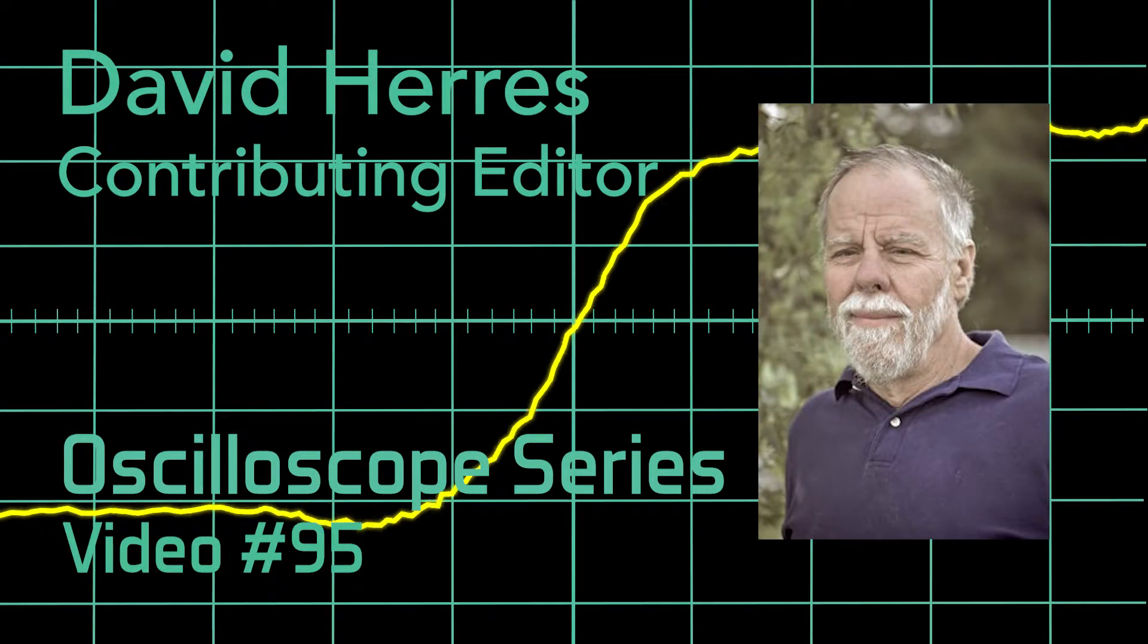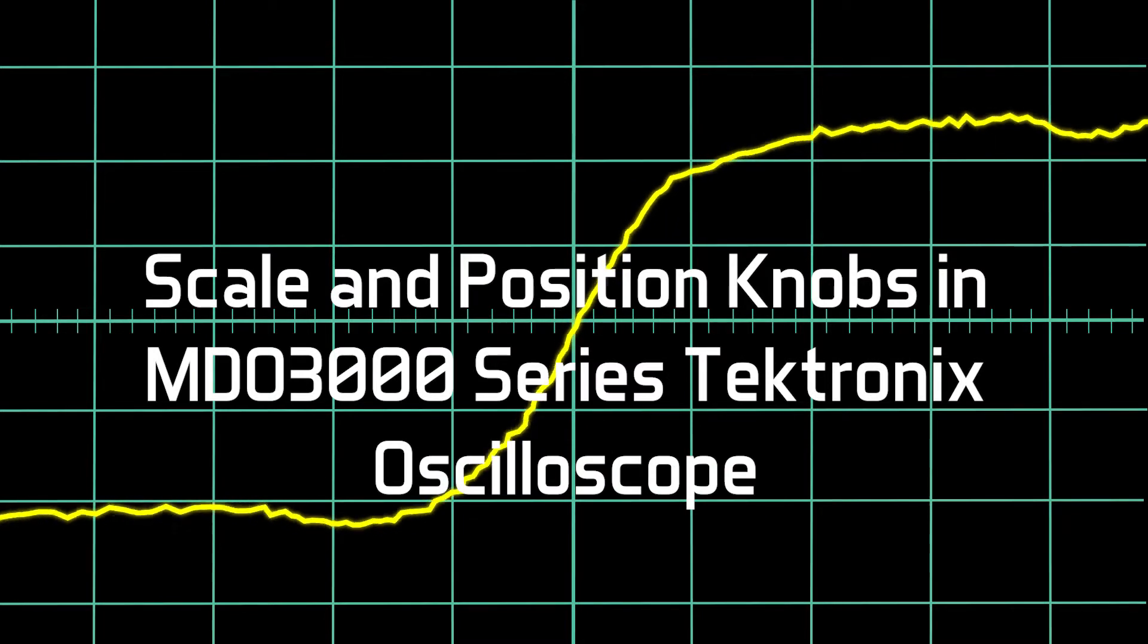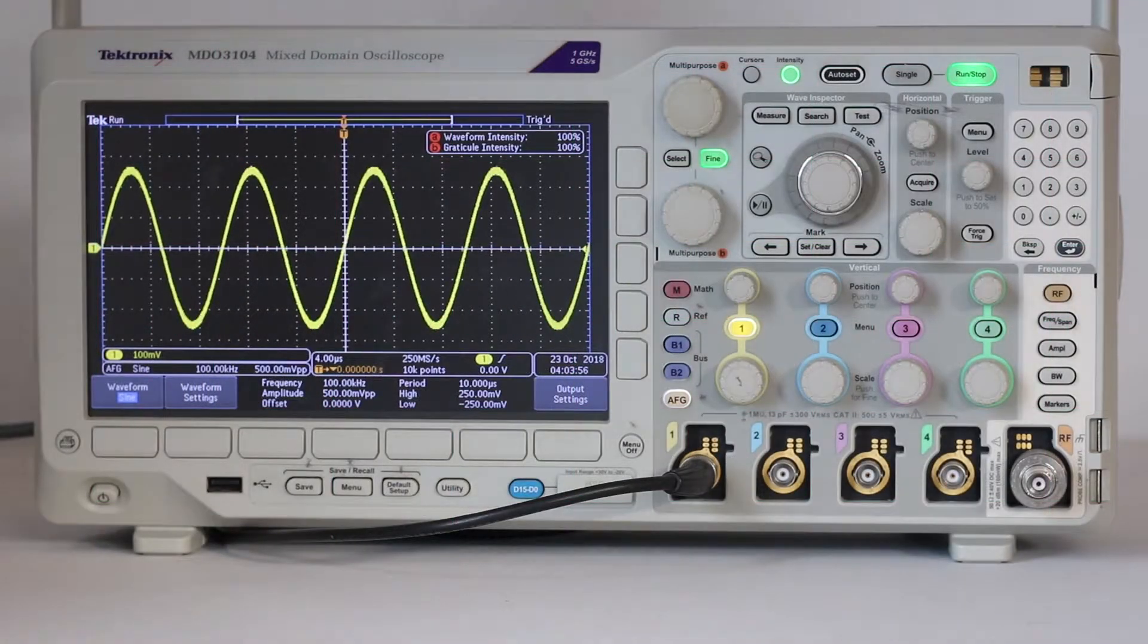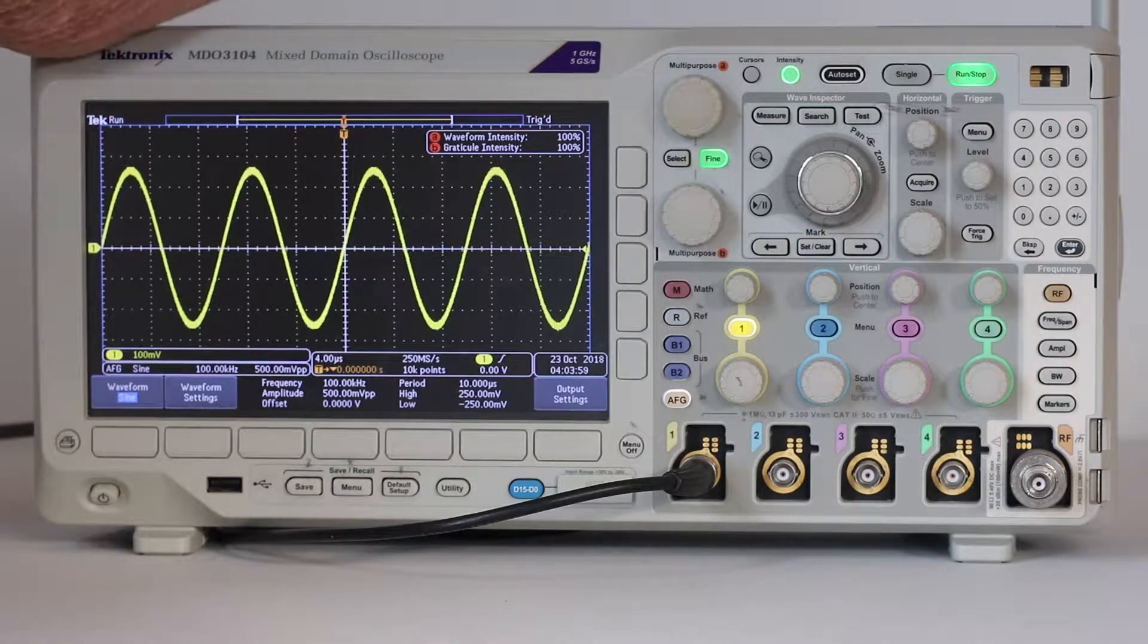Hi and welcome to our 95th test and measurement video. Today's topic is the scale and position knobs in the Tektronix MDO 3000 series oscilloscope.